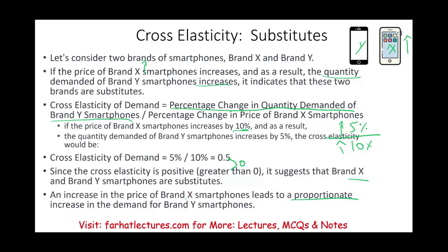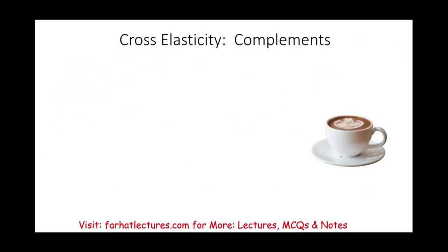As the price of brand X went up, people switched to brand Y. We measured this through the change in quantity demanded for brand Y as the price of brand X changed. Brand X went up — and demand for brand Y went up as well. These products are substitutes. How do we know? Because the coefficient is positive, greater than zero.